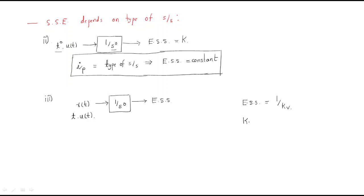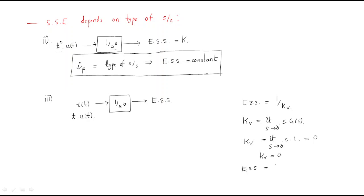The formula for kv is: kv equals limit as s tends to 0 of s into G(s). Here, the limit as s tends to 0 — G(s) is 1 because s power 0 is 1 — so kv value is 0. When kv is 0, steady-state error equals 1 by kv, that means 1 by 0, which becomes infinite.